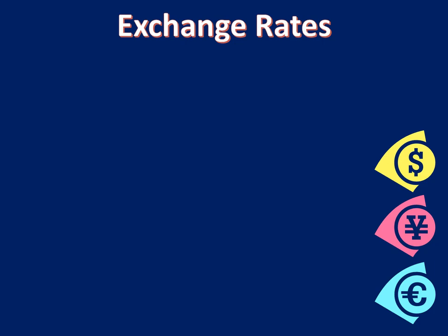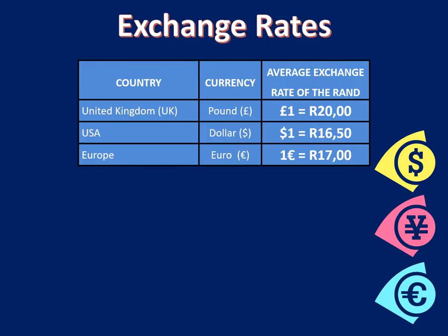In this video we're going to look at exchange rates between the United Kingdom, the USA, Europe and South Africa. The rate of exchange is approximately correct for August 2022, where one pound is worth approximately 20 rand, one US dollar is worth 16 rand 50, and one euro rounded off is about 17 rand. Those are the exchange rates we're going to use.